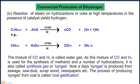This mixture of CO and H₂ is used for the synthesis of methanol and a number of hydrocarbons, so it is also called synthesis gas or syngas. Nowadays, syngas is produced from sewage, sawdust, scrap wood, newspapers, etc. The process of producing syngas from coal is called coal gasification.